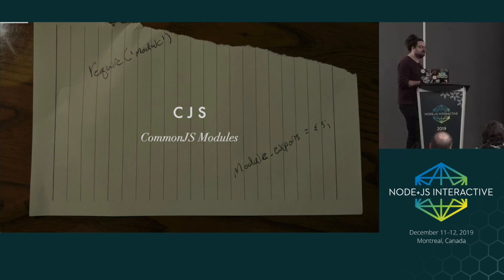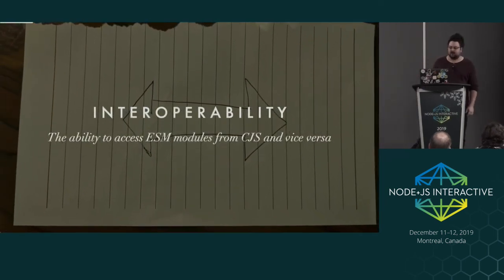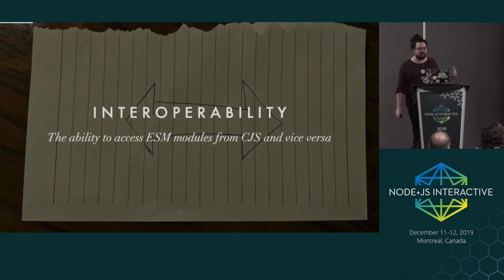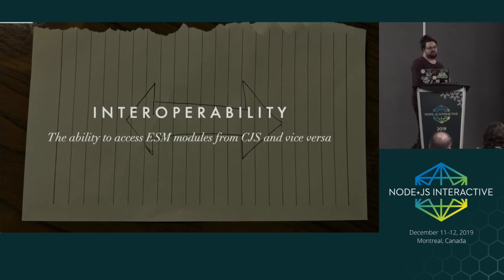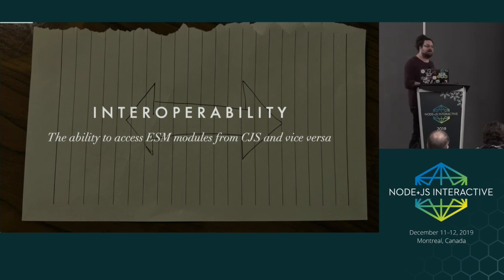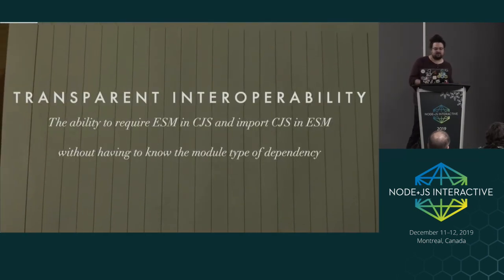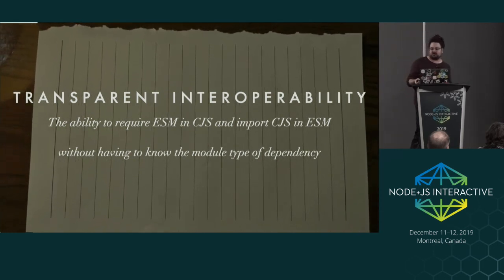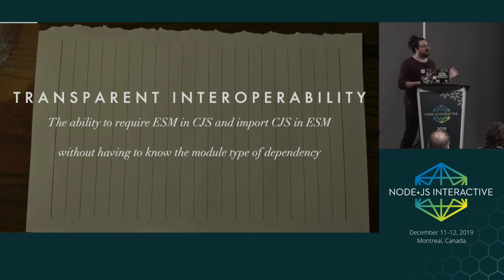These are two fundamentally different loaders. CJS is the loader Node has been using for over a decade. ESM was specified in 2015 and is kind of becoming a real thing now. Interoperability is the ability to access ES modules from CJS and vice versa. This is extremely important for our ecosystem because we have a giant repository online of many, many modules. Moving to ESM should not be a time where we say goodbye to those modules - we want to keep them usable, and when we have a whole new ecosystem of new modules, we want to be inclusive. Transparent interoperability - the ability to require ESM and CJS or import CJS and ESM without knowing the module type of the dependency - spoiler alert, it doesn't work. Sorry, we tried really hard.